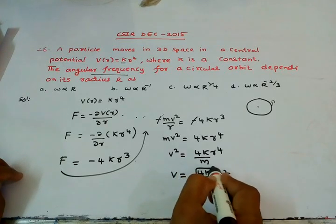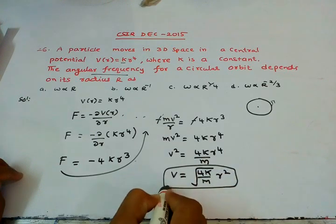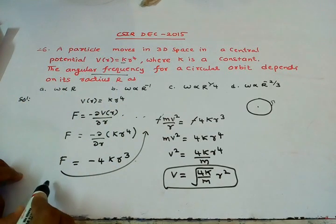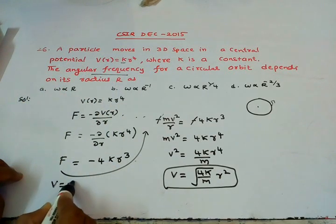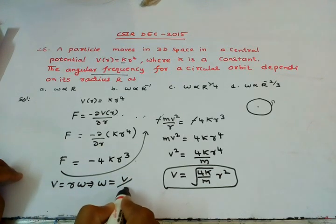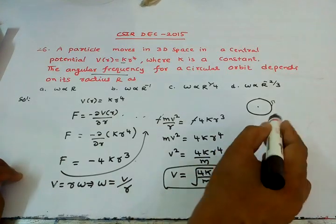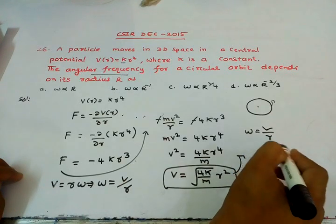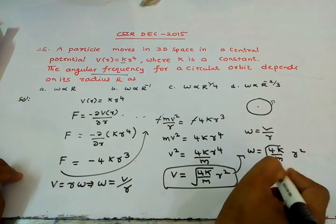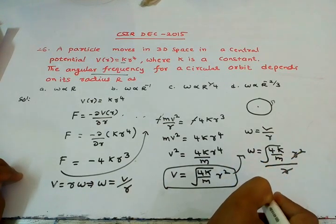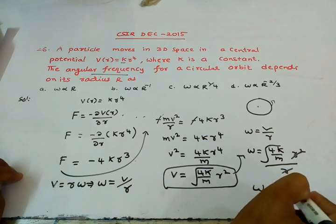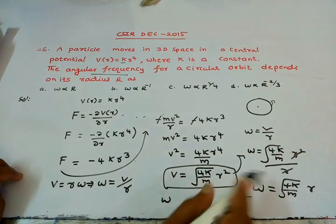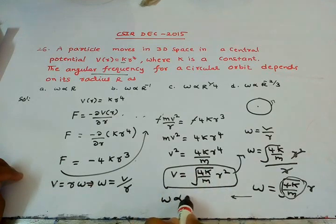What we want here is angular frequency. Generally we know the relation V = Rω. Omega is nothing but V/R. So from this, ω = V/R. That is equal to √(4k/m) R² by R. So here √(4k/m) R. From this relation, this is the constant term, so ω is proportional to R.